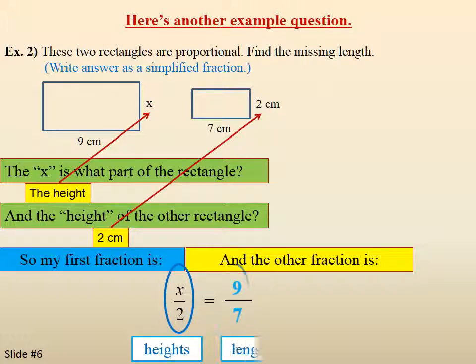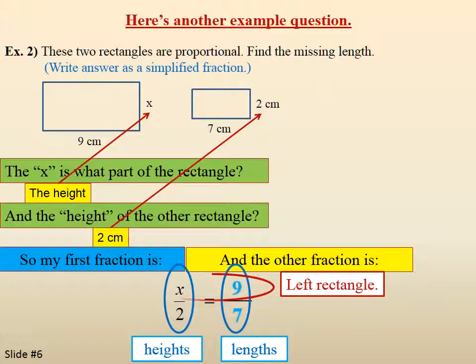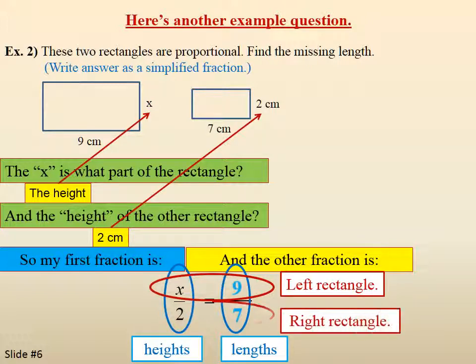The first fraction is the heights of the rectangles and the second fraction is the lengths. The numerators are from the left rectangle and the denominators are from the right rectangle, so everything is related both vertically and horizontally.